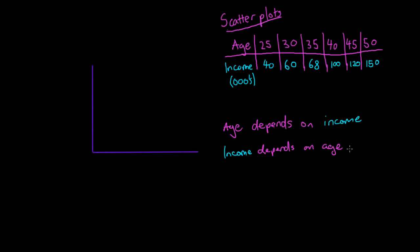We're likely to choose this option and say income depends on age. So if income depends on age, income will be dependent and age will be independent.